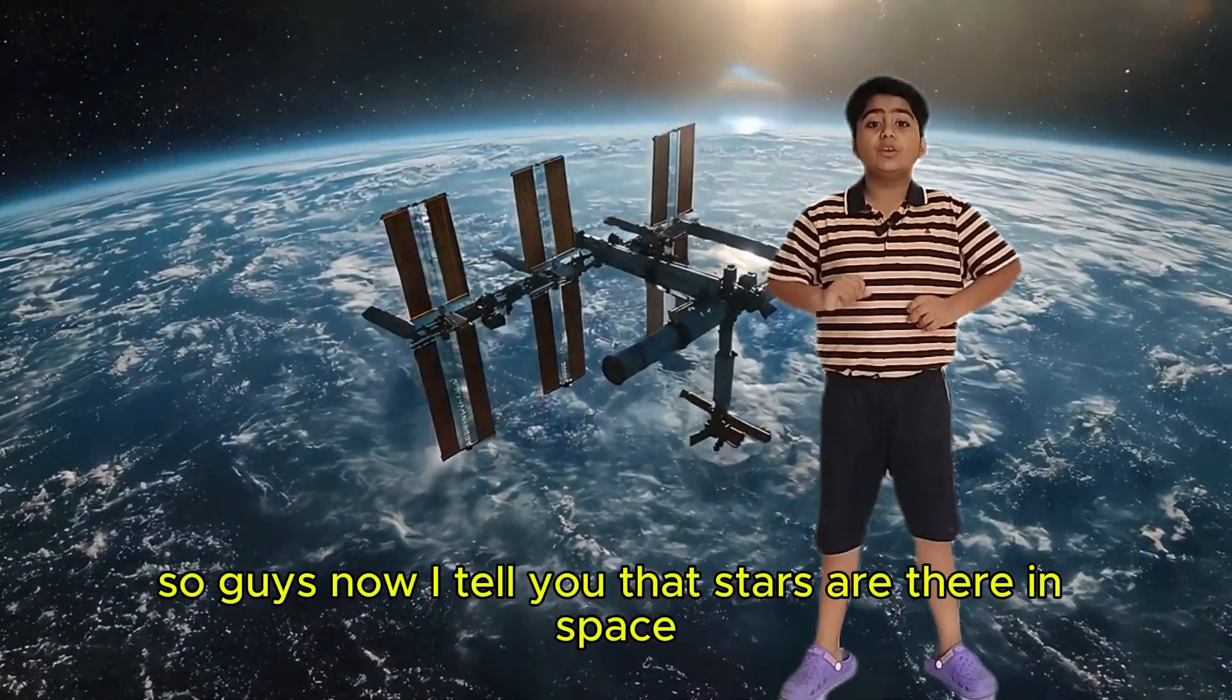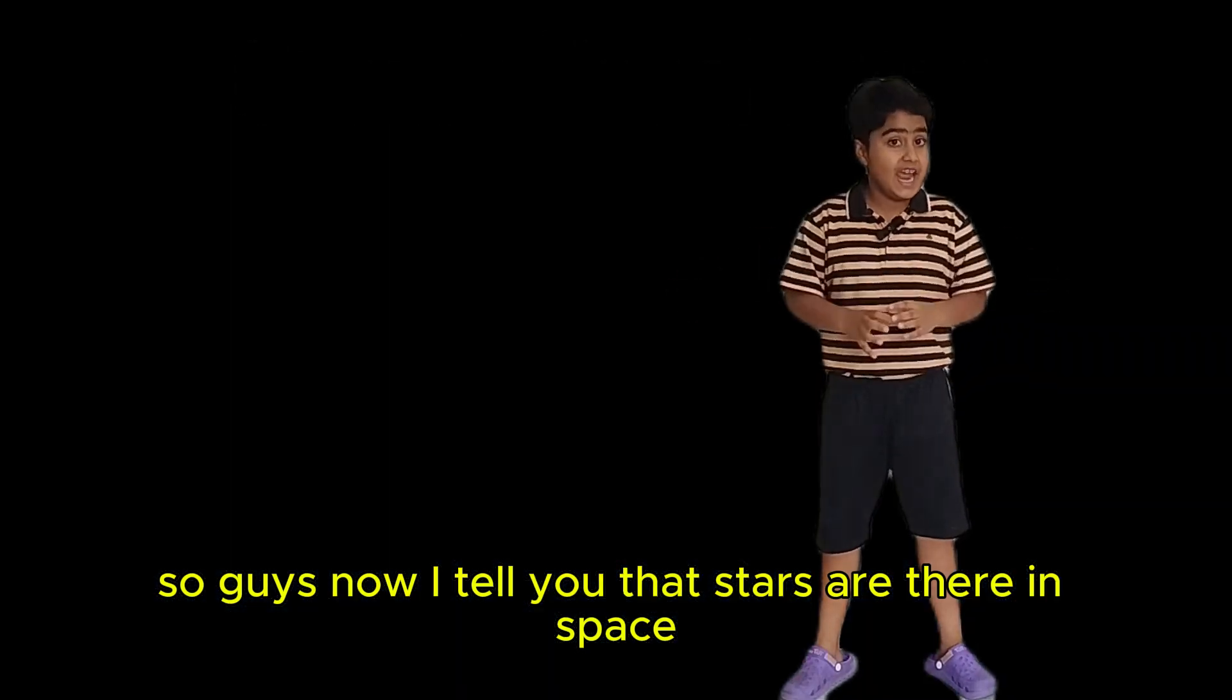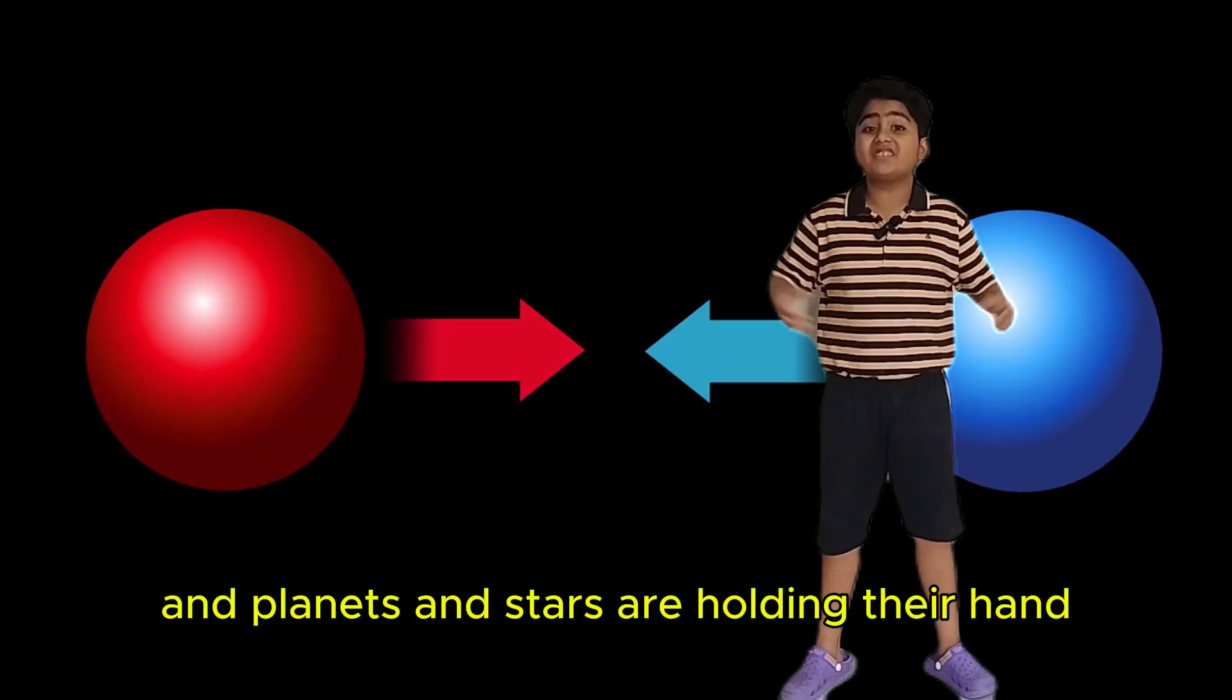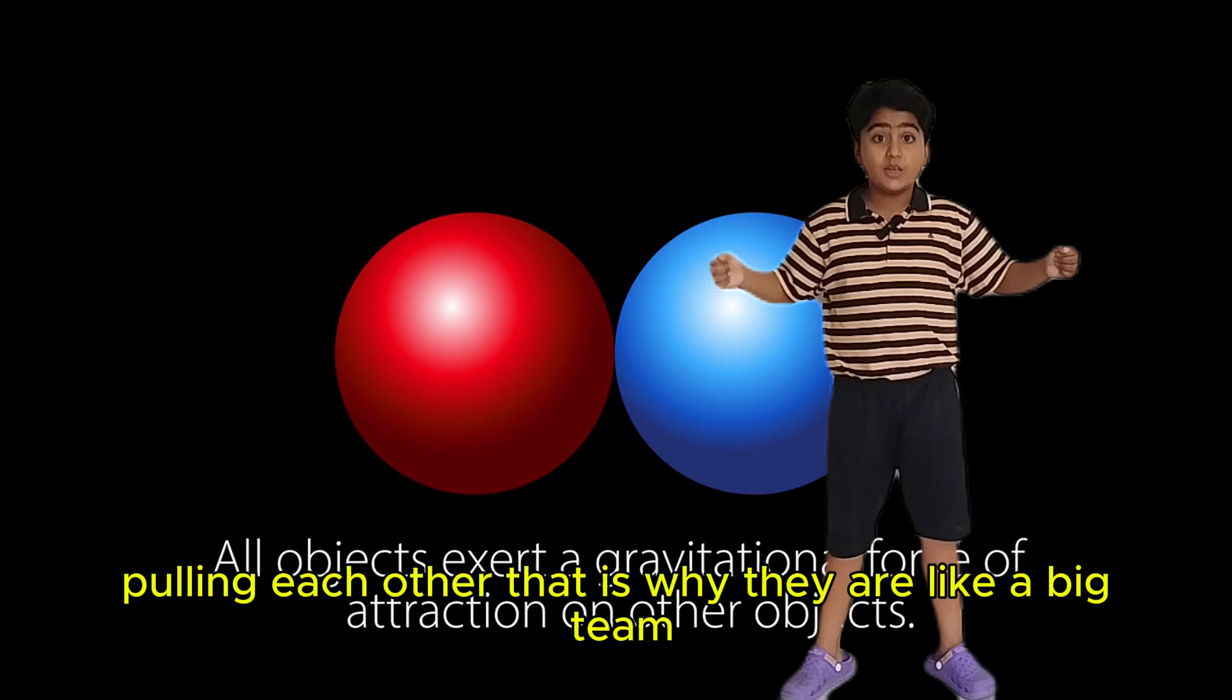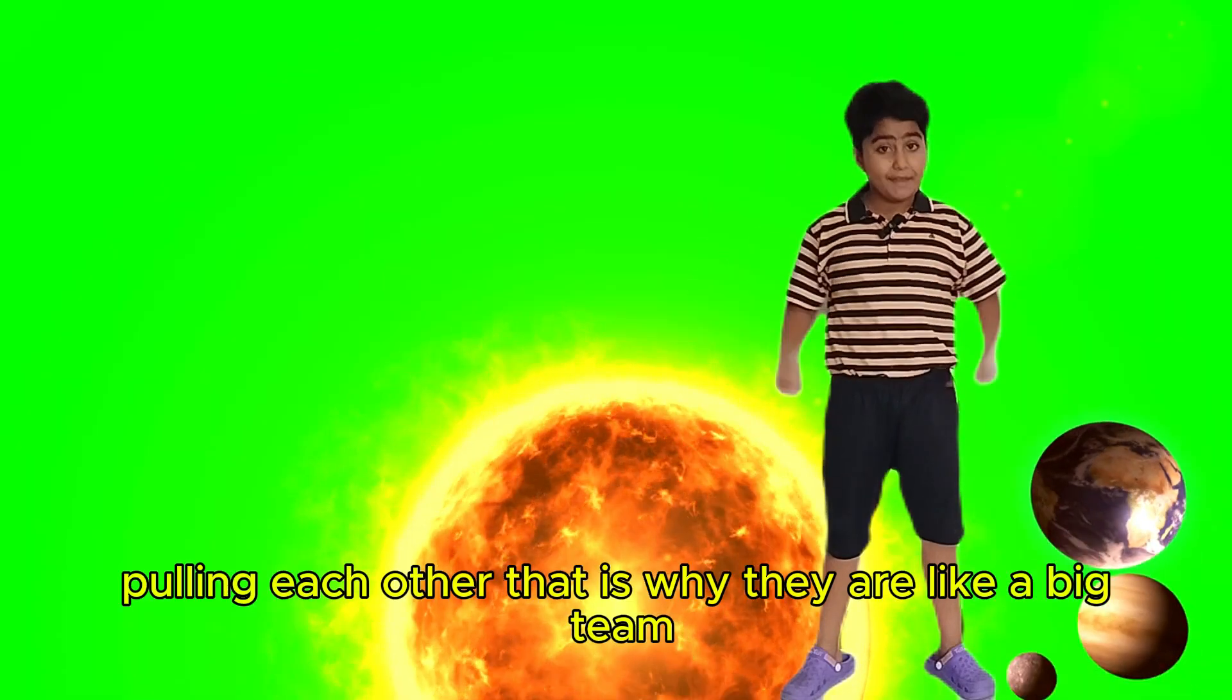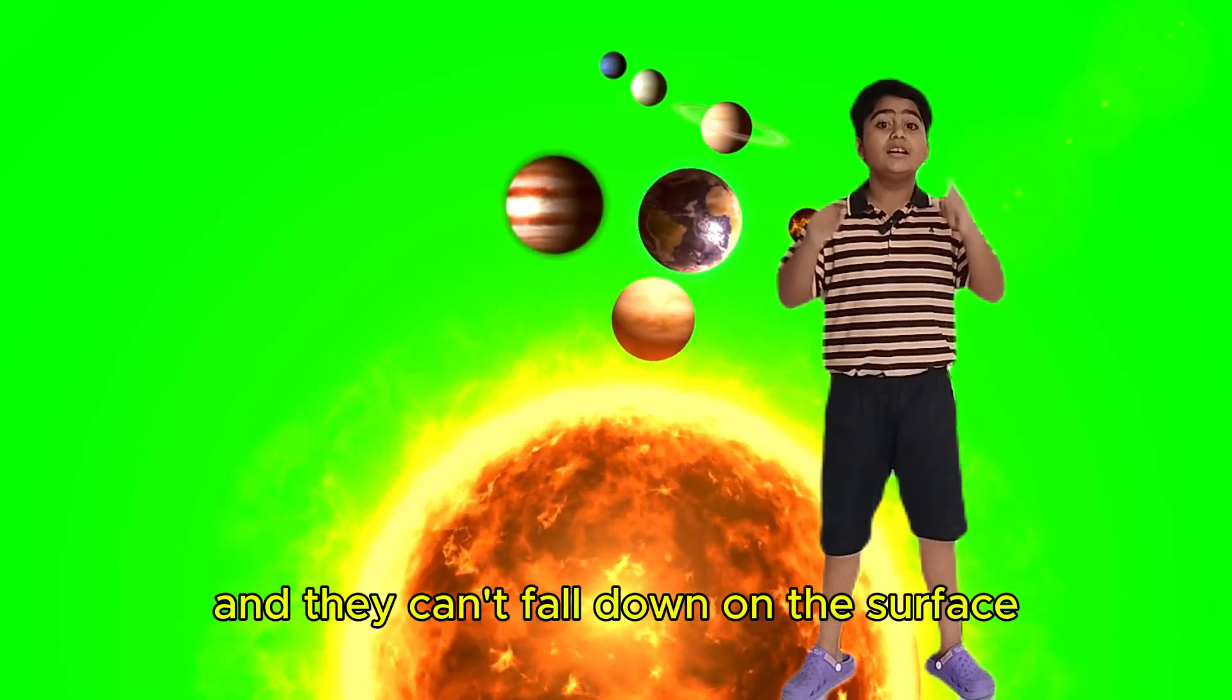So guys, now I tell you that stars are there in space. And planets and stars are holding their hand, pulling each other. That is why they are like a big team and they can't fall down on the surface.